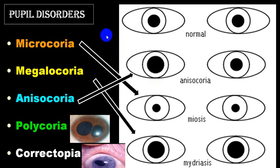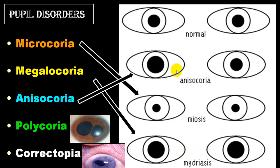If two pupils are not equal, we use the word anisocoria. If both are pinpoint, we call it miosis; if both are equally dilated, we call it mydriasis. Another word for miotic pupil is microcoria; for dilated, megalocoria. If two are unequal — one small, one dilated — we call it anisocoria. If there are more than one pupil, it is polycoria. If the pupil is eccentric, it is called corectopia. These terms are frequently asked in oral exams.